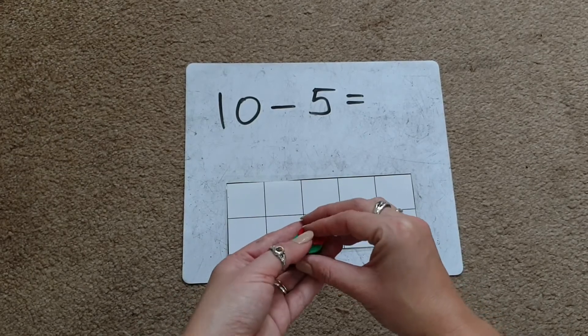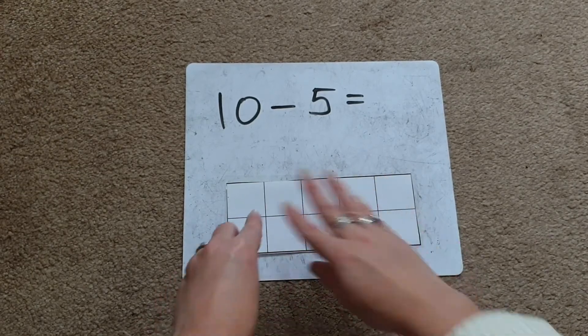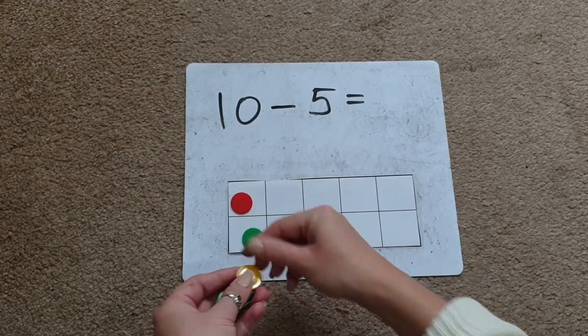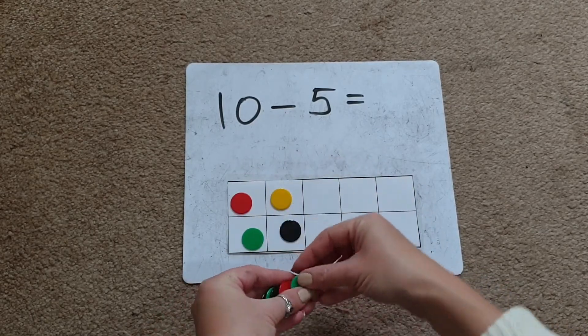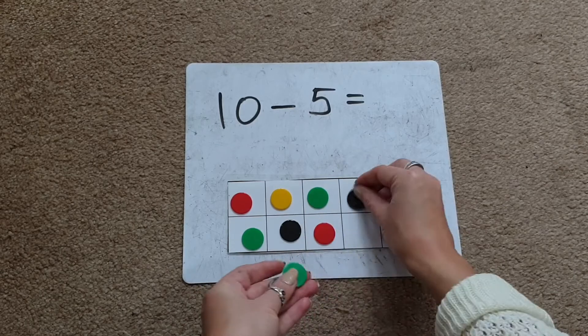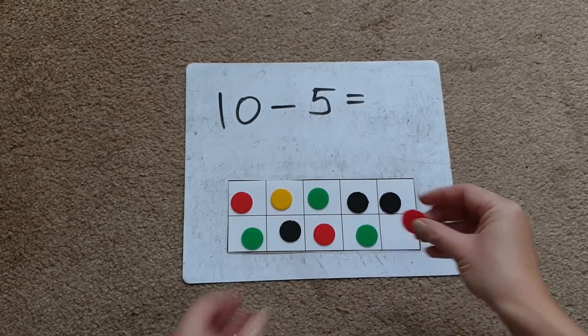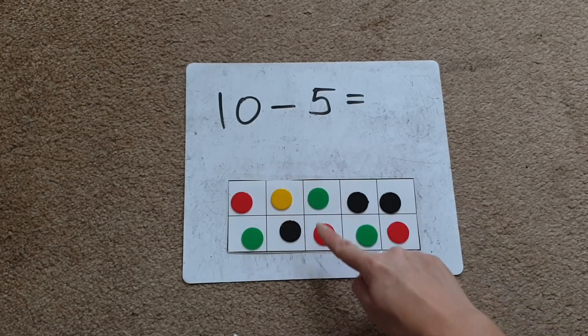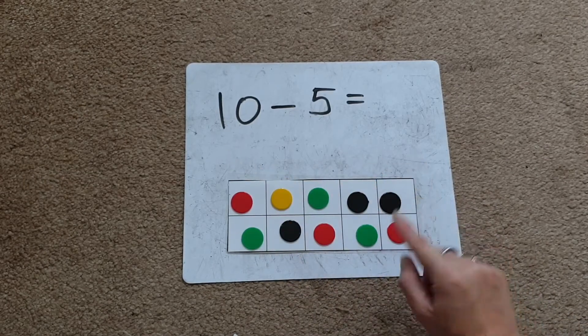So hopefully if children have worked with 10 frames before, they know that 10 means we're going to have a full 10 frame. So there needs to be one thing in each box on the 10 frame. There we go. And then we would check that we do indeed have 10: 1, 2, 3, 4, 5, 6, 7, 8, 9, 10.